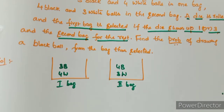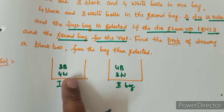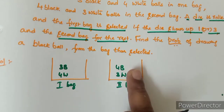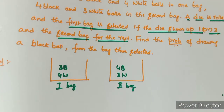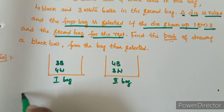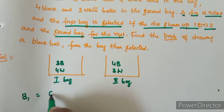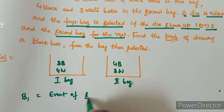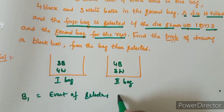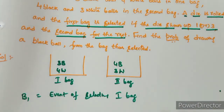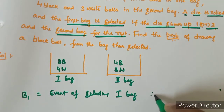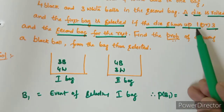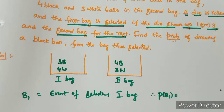This is a very important question. First bag contains 3 black and 4 white balls, and second bag contains 4 black and 3 white balls. First we will define the events for selecting the bags. B1 is the event of selecting the first bag. P of B1 is the probability of selecting the first bag — die shows 1 or 3, so 2 favorable outcomes out of 6.